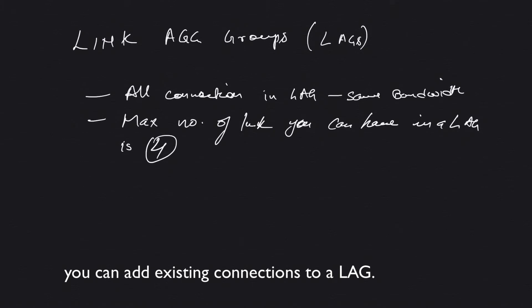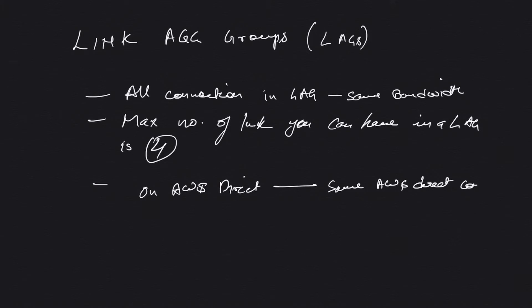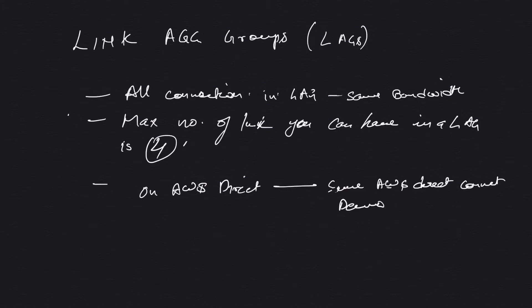The final condition is that on the AWS Direct Connect location, your link should come from the same AWS Direct Connect device. Let me show you what I mean. You must be knowing that in an AWS Direct Connect location you have multiple devices, and you can either have your connection going from different devices or from the same device.